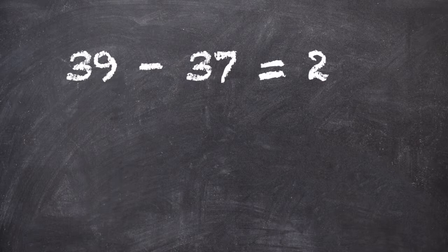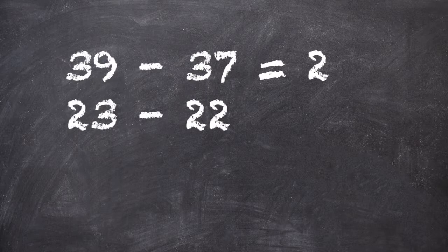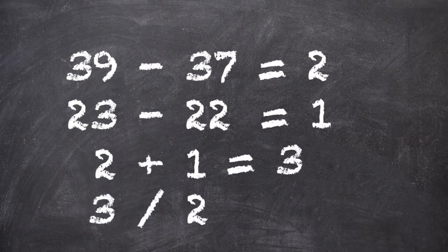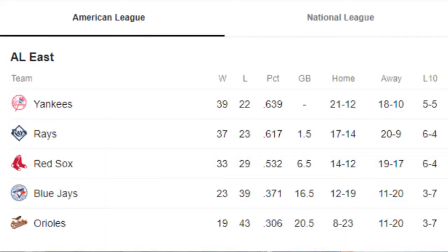Then we look at the difference in losses. In this case, Tampa Bay has more losses than the Yankees do, so we'll put their loss number first. So it's 23 minus 22, giving us a difference of one. Now we'll add those two numbers together — two plus one is three. And then we divide that number by two, giving us 1.5. And if we look at where the standings were at the time of this recording, you can see the Tampa Bay Rays were 1.5 games behind the Yankees.